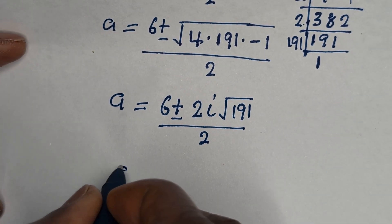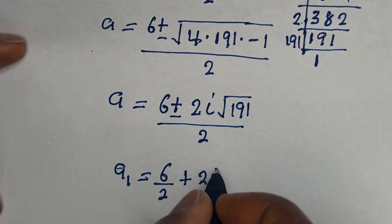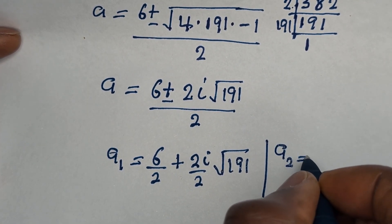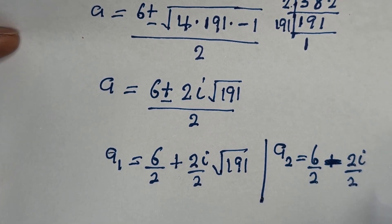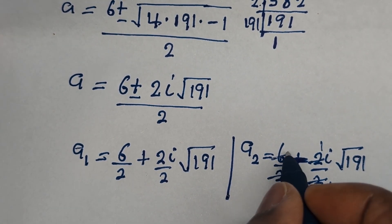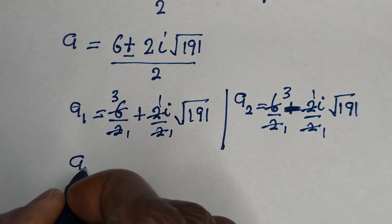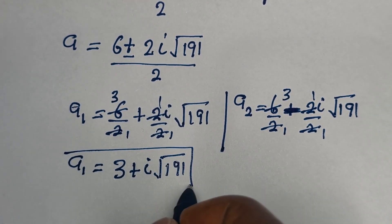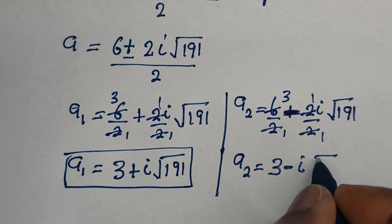Therefore, A1 is equal to 6 over 2 plus 2i over 2 times square root of 191, which simplifies to 3 plus i square root of 191. And A2 is equal to 6 over 2 minus 2i over 2 times square root of 191, which simplifies to 3 minus i square root of 191.